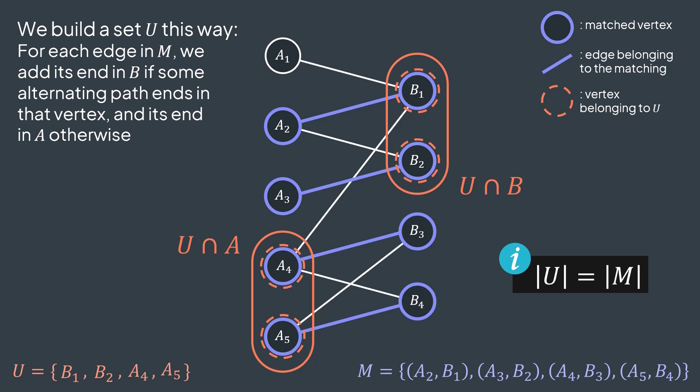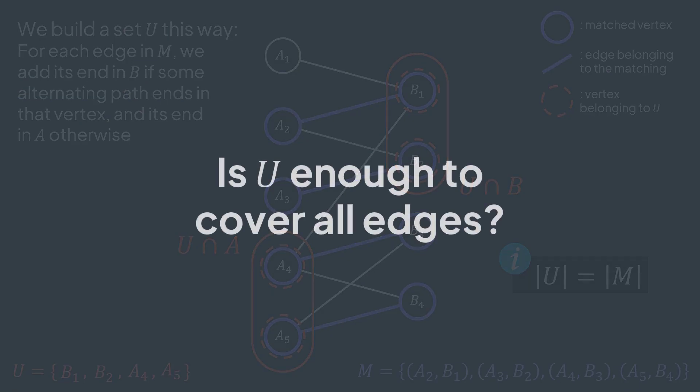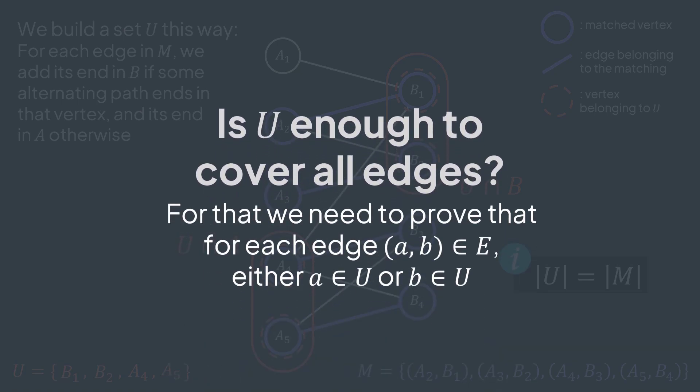We now need to prove that U is enough to cover all edges — that U is a vertex cover. An edge (a, b) is covered if one of its ends, a or b, is in the set U. This is what we will try to prove: that for any edge (a, b) of the graph, we can find one of its ends in U.